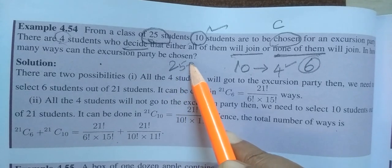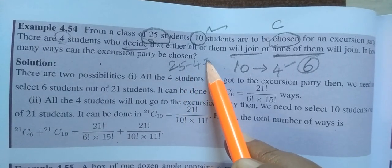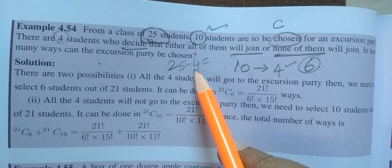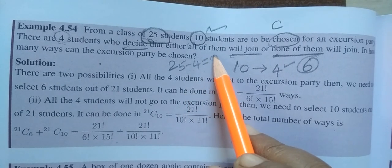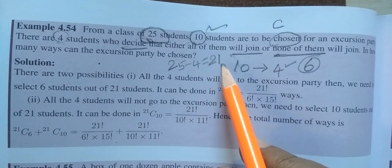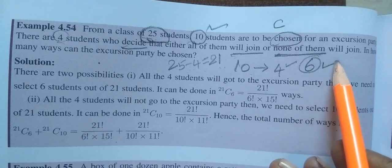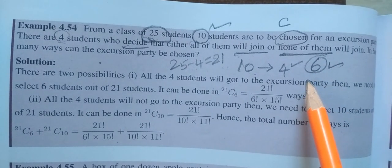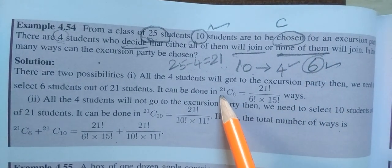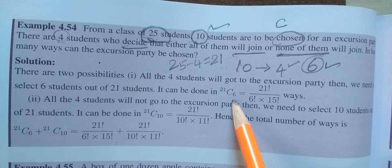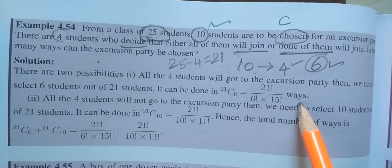So, 25 minus the 4 is separate. The 4 already choose for the excursion. So, remaining 21 students. Out of the 21 students, we are selecting 6 students for the excursion. So, 21 C6. Hope you understand. It is one of the formula.